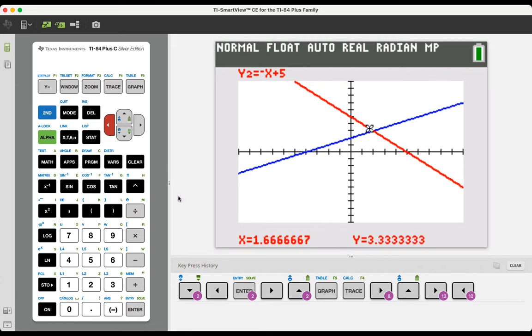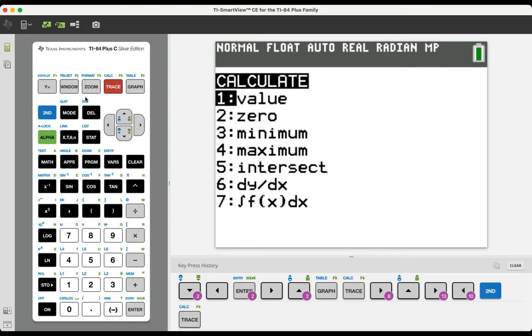However, we do want the calculator to find it for us exactly. So we press second, trace, and open up the calc menu or the calculate menu, and we arrow down to number five, which is intersect, and we press enter.